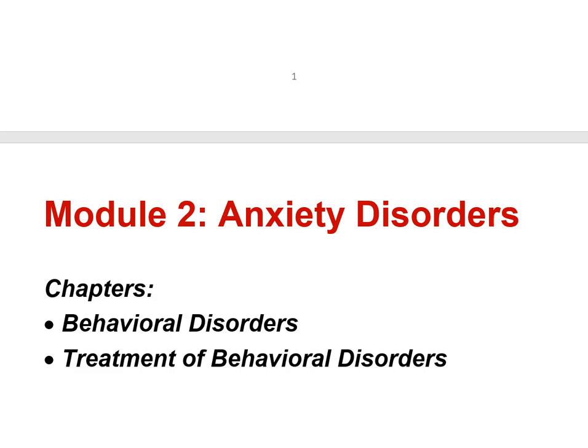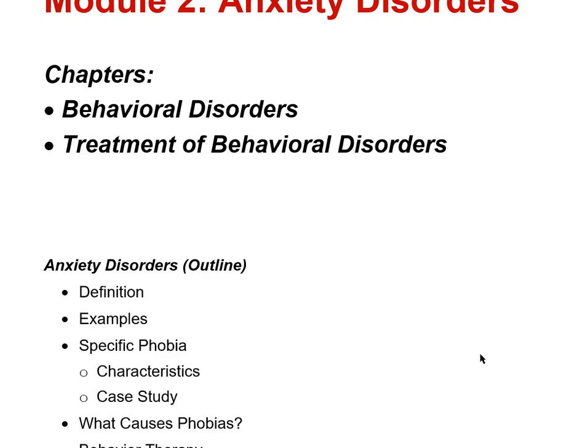The module is Module 2, Anxiety Disorders. I'm actually going to draw on information from two chapters in our current unit. Unit 5, the last unit of the semester, involves two chapters from Ettinger: his chapter on Behavioral Disorders and also his chapter on Treatment of Behavioral Disorders. I'll be drawing on information from both of those chapters and adding some new information as well.